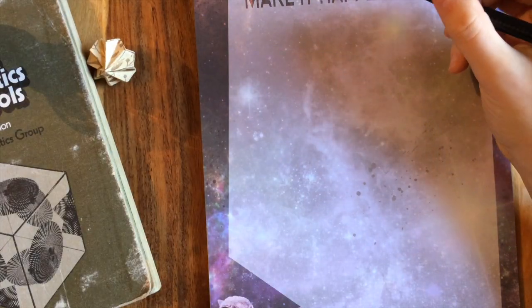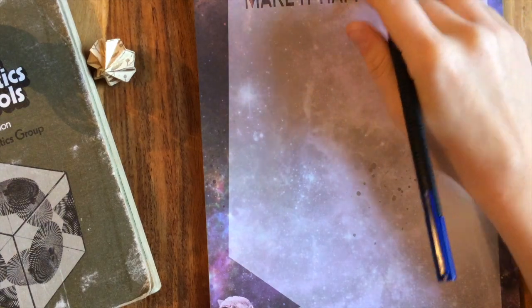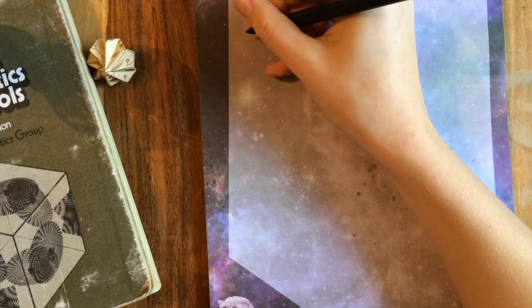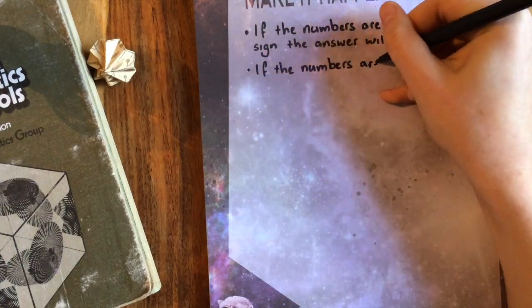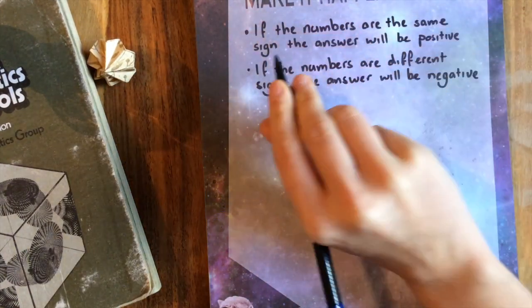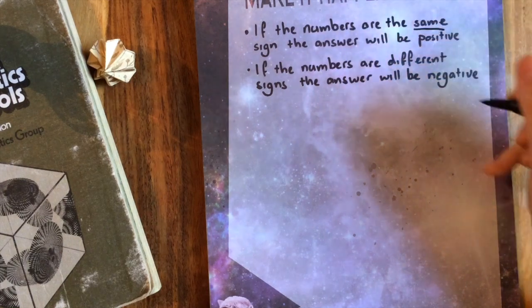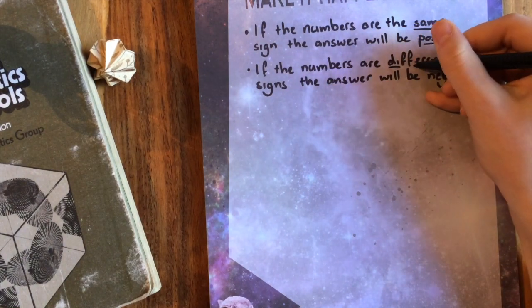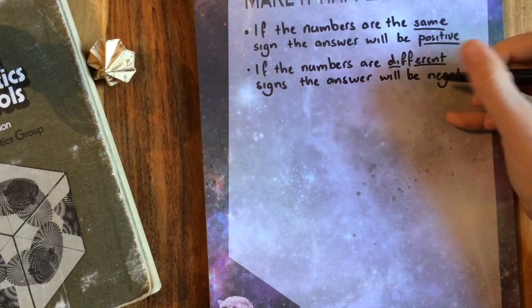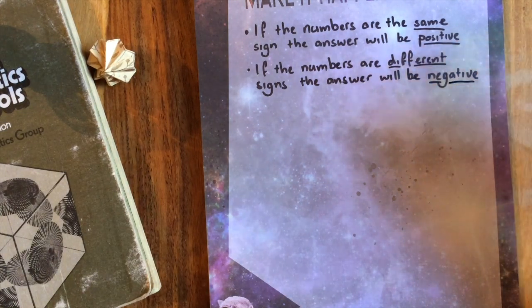Let's look at some examples. Multiplying and dividing negative numbers. So in this case, again, maths isn't about rules, but sometimes it can be helpful to think of some rules. So if the numbers are the same sign, the answer will be positive. If the numbers are different signs, the answer will be negative.